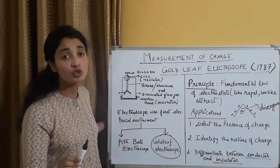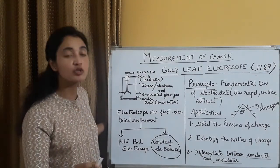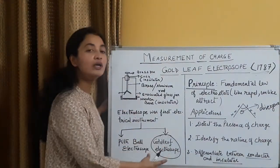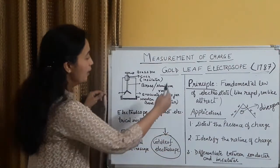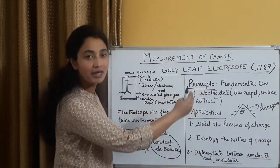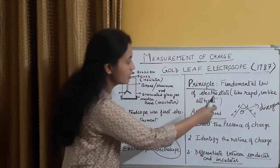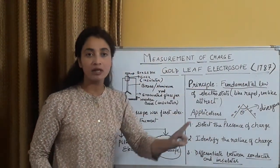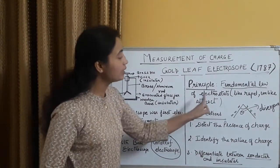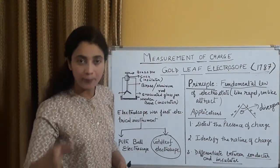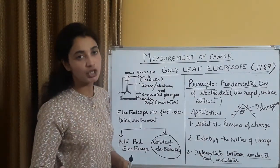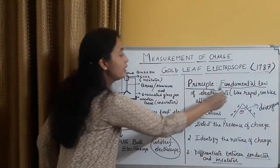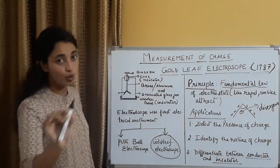First we will come to the electroscope, which was first electrical instrument ever devised to measure charges. Initially, there were two types, pith ball electroscope and gold leaf electroscope. Out of these two, we will be concentrating on gold leaf electroscope. The principle upon which it works is the fundamental law of electrostatics. Fundamental law of electrostatics, it works by this principle.